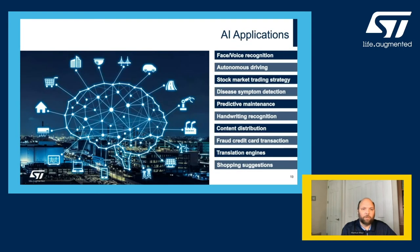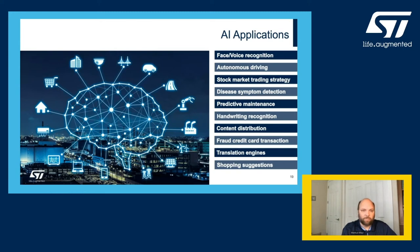Probably all of you have heard about AI in one way or another, and it is already used very widely in our daily life to improve or make certain tasks even possible. Some examples are face or voice recognition, autonomy, predictive maintenance, anomaly detection, medical diagnosis, disease detection or prevention, handwriting recognition, credit fraud detection, translation engines, shopping suggestions, and a lot of others. As you can see, AI is already playing a big role in our daily lives.